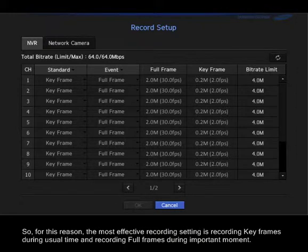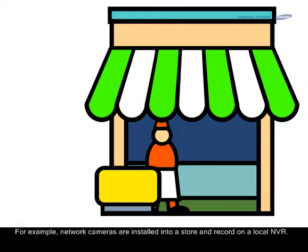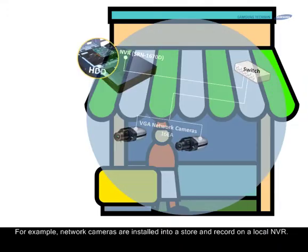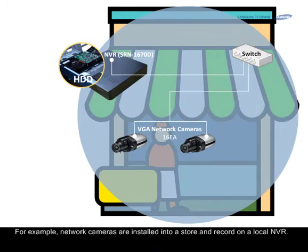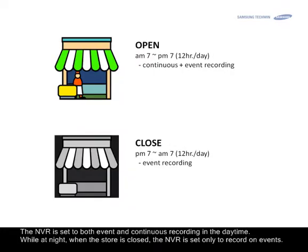However, keyframe data could play back with unnatural images because of the low frame rate. So the most effective recording setting is keyframes during usual time and full frame recording during important moments. For example, network cameras are installed in a store and record on a local NVR, set to both event and continuous recording in the daytime.